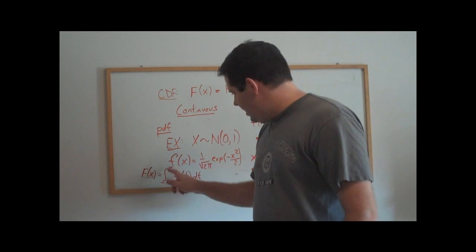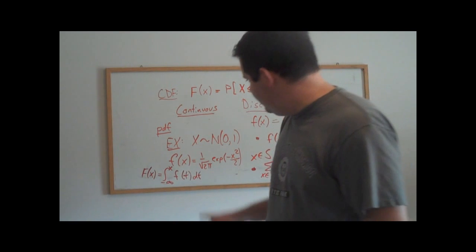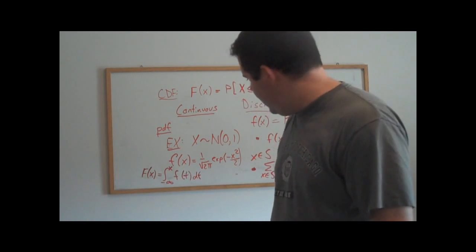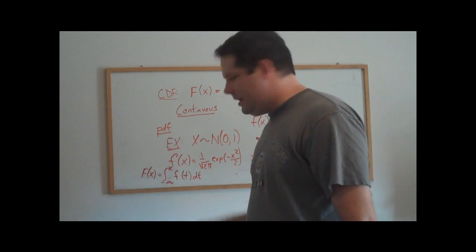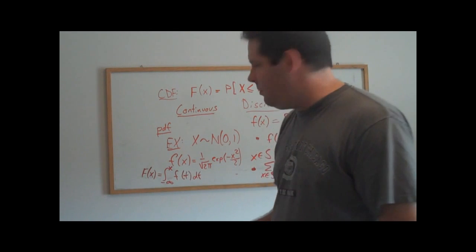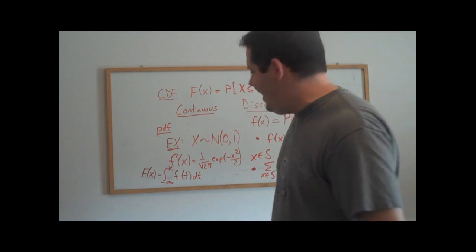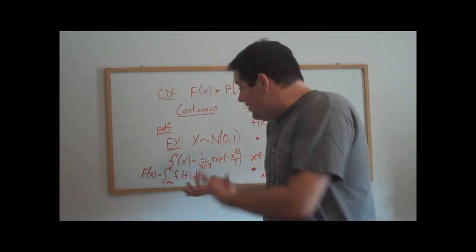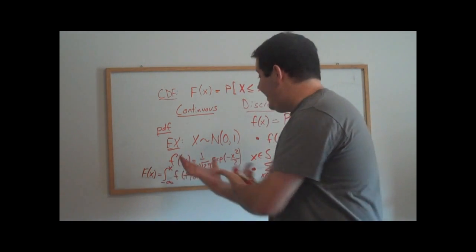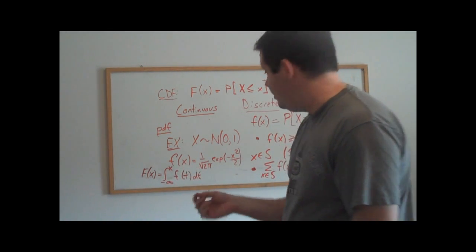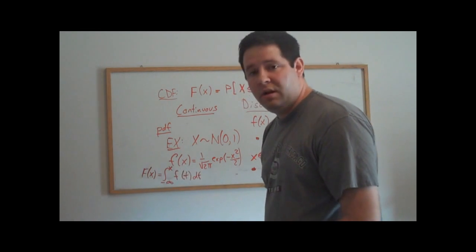We could use the fundamental theorem of calculus to determine what the distribution function is here. That is, we could integrate all the way up to some value x of this density here. Now, that integral is hard to compute numerically, doesn't have a closed form solution, but they have tables to this. And what you do is you integrate this, you can do this with any continuous random variable. You can integrate up to some value here.